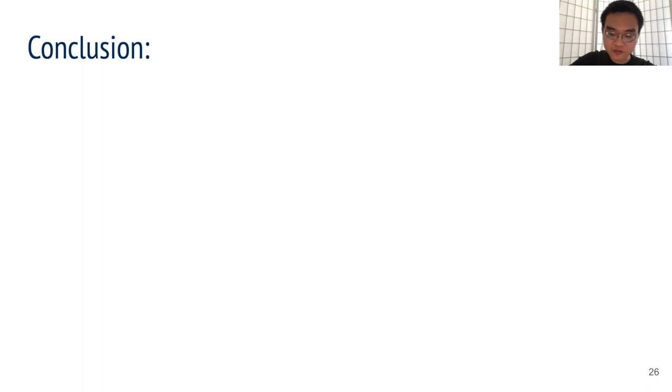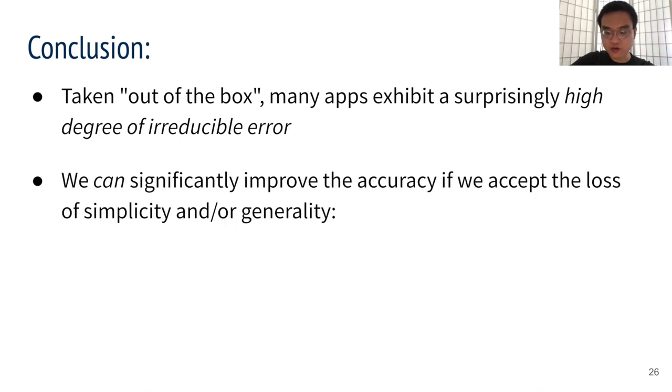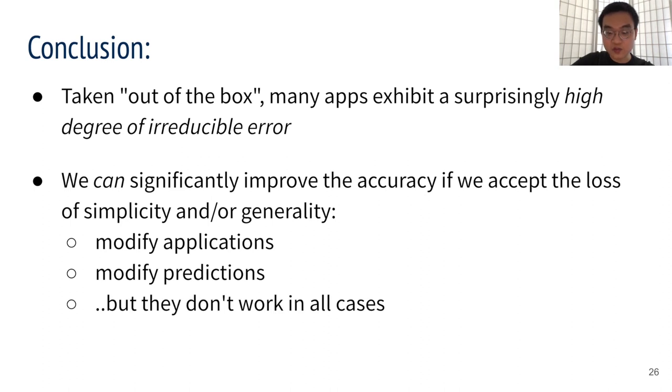With these results and methodology in mind, here are our conclusions. First, it is common for applications to exhibit a high degree of irreducible error, and this limits the accuracy that any machine learning-based predictor can achieve. Meanwhile, if we forfeit the requirements of simplicity and generality, we can significantly improve the accuracy either by doing root cause analysis and modifying the apps or modifying the predictions. But they don't work in all cases, especially as we move on to more realistic prediction scenarios.